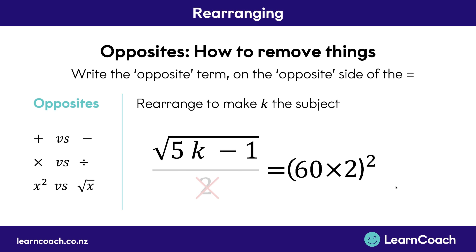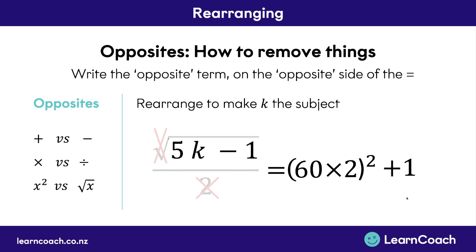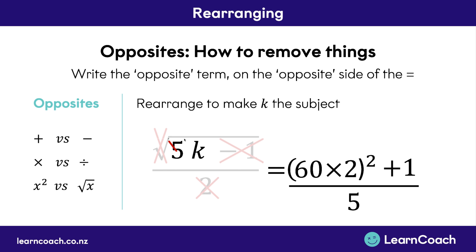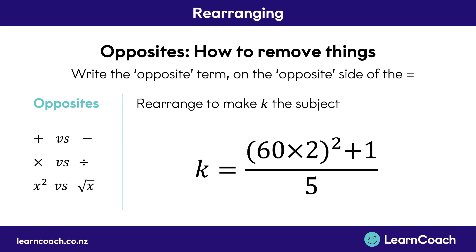Once you've squared the whole right-hand side, you can get rid of the square root. Now we still have a minus 1 tacked on. The opposite of a minus 1 is a plus 1, so we put plus 1 on the opposite side of the equals sign, then cross out the minus 1. Finally, we have a times 5 next to K — the last thing remaining. The opposite of times 5 is divided by 5, so we draw a big line underneath the whole right-hand side and divide by 5. We cross out the times 5 and all we're left with is K. Written neatly: K equals 60 times 2 squared plus 1, all divided by 5.